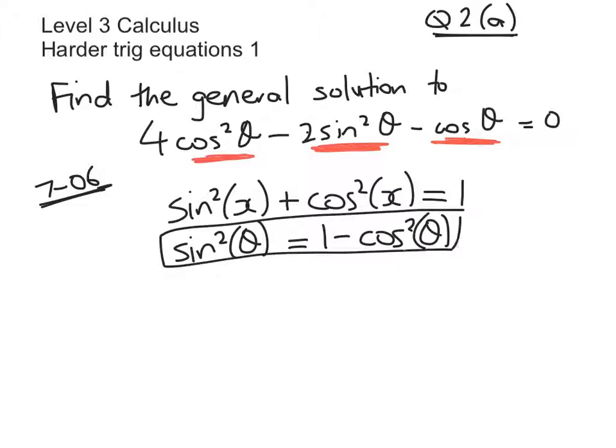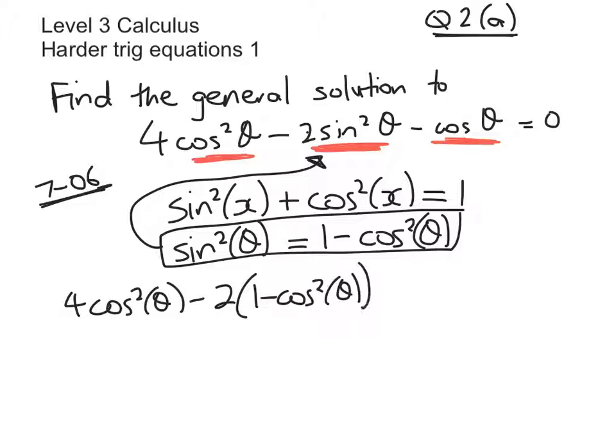That won't always work, but it's a good thing to try here. So substituting that in, we get 4cos²θ - 2 times (1 - cos²θ). Just be careful with your brackets. Minus cosθ equals 0.